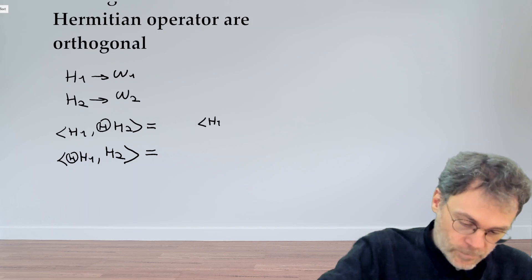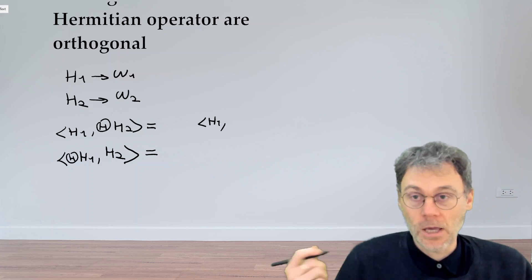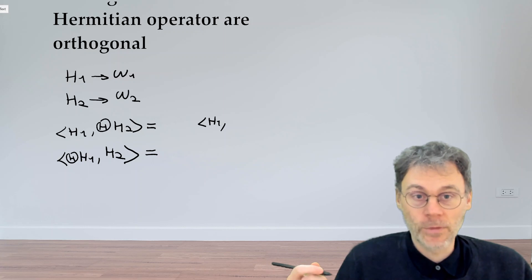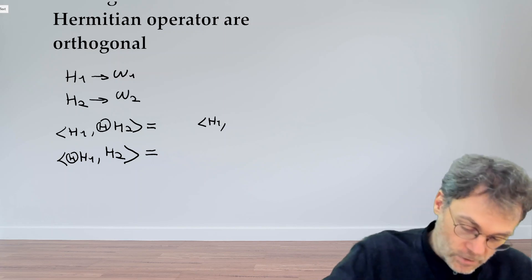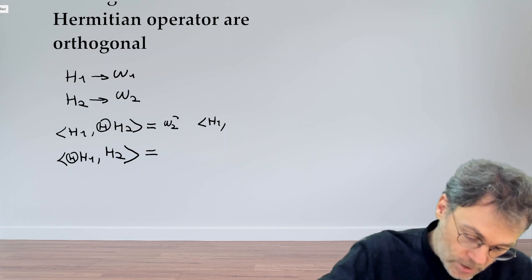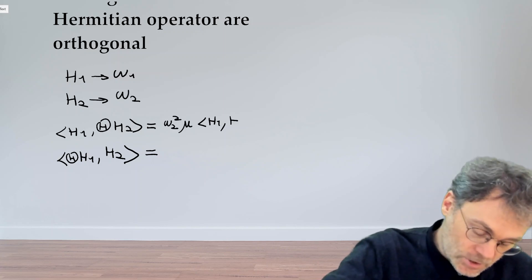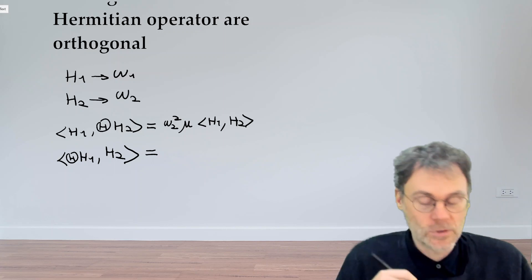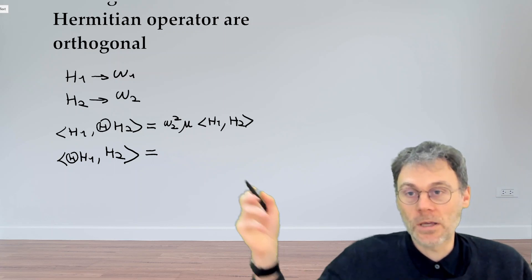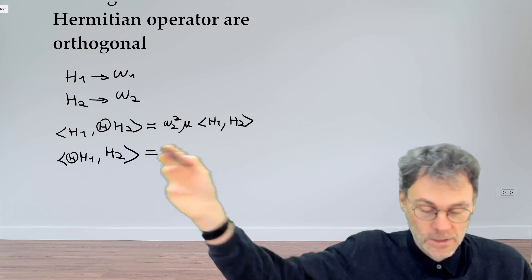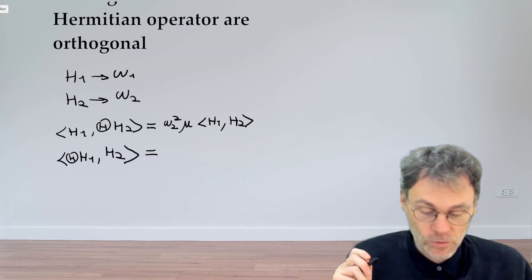So H1 is, of course, H1. But theta H2, since we have an eigenproblem, theta H2 is going to be equal to the eigenvalue, which in our case for H2 is omega 2 squared mu times H2. So this is what we have when we substitute the fact that here we have an eigensolution H2.